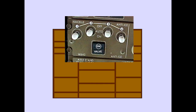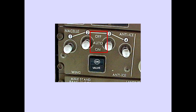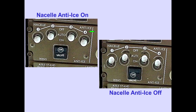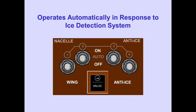The nacelle wing anti-ice control panel is located on the overhead panel. A three-position nacelle anti-ice switch is provided for each engine. With a switch on, the nacelle anti-ice for the respective engine is on. With a switch off, it is off. With a switch in auto, nacelle anti-ice operates automatically in response to inputs from the ice detection system.